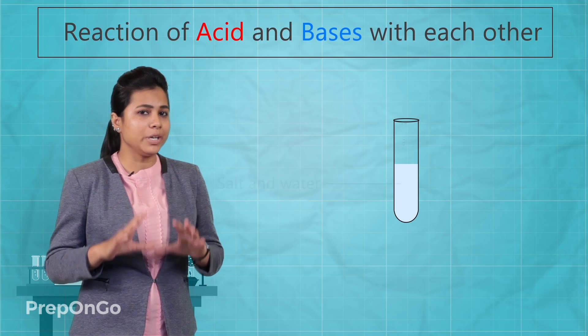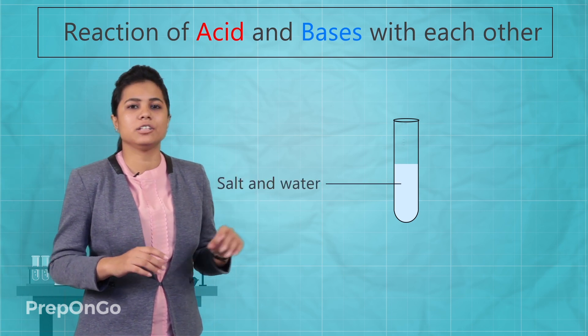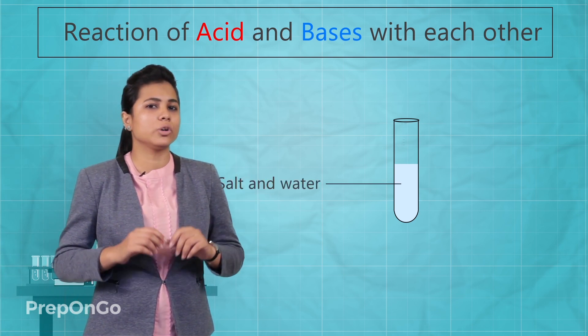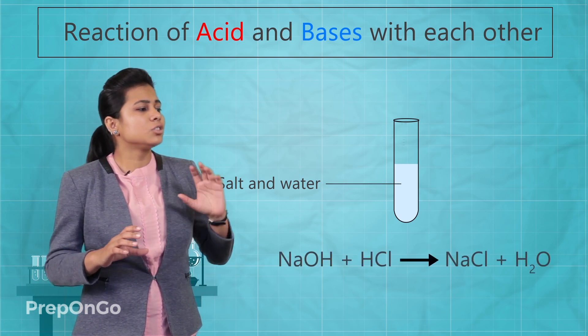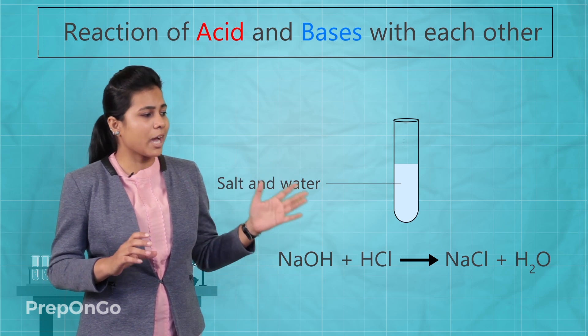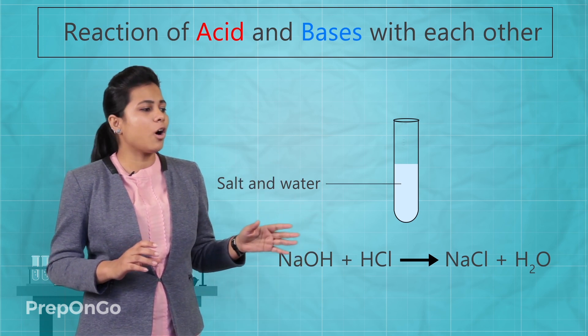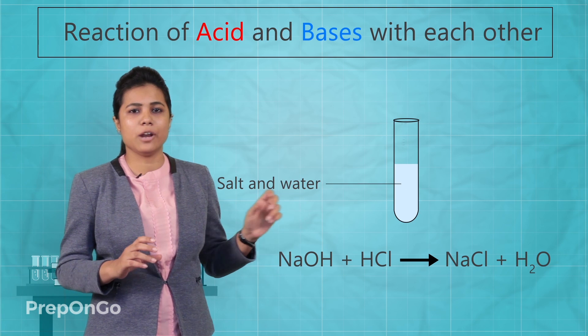Now in the test tube we have water and salt. The salt is sodium chloride. So the reaction can be written as sodium hydroxide when reacts with hydrochloric acid it forms sodium chloride and water.